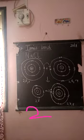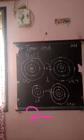The next one is the chlorine atom. What is the atomic number? 17. So, what is the electronic configuration? 2, 8, 7.